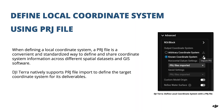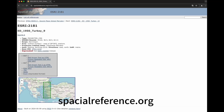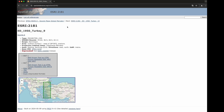When defining a local coordinate system, which is also a known one, a PRJ file is a convenient and standardized way to define and share coordinate system information across different spatial datasets and GIS software. The PRJ file of the target coordinate system can be downloaded from spatialreference.org. Go to the website, search for your target coordinate system, and download the PRJ file from the page.